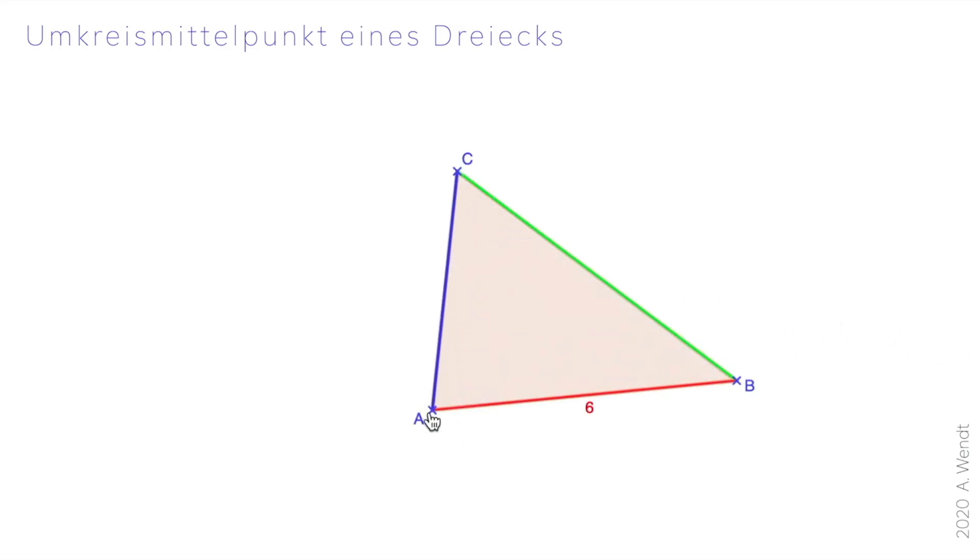Die Mittelsenkrechte könnte man zeichnen, indem man hier 6 durch 2 teilt. Dann hätte man die Mitte 3 und dann könnte man mit dem Geodreieck den rechten Winkel zeichnen. Und dann hätte man die Mittelsenkrechte.